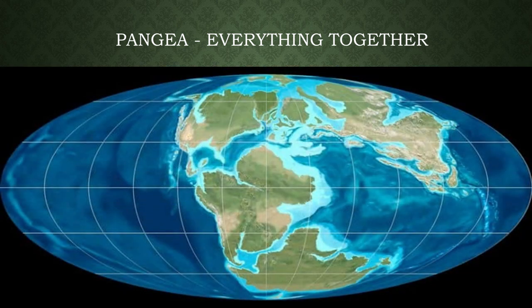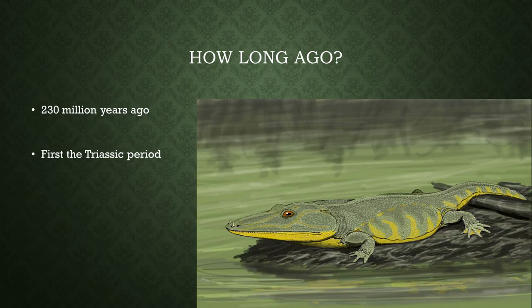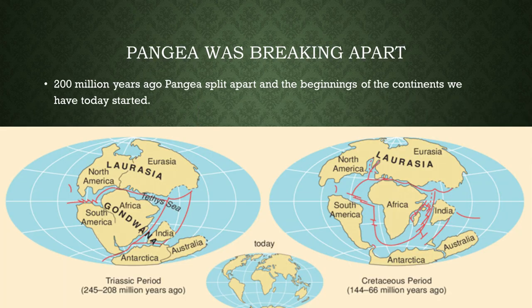But during this time, all the Earth's continents didn't look like they do today. Instead, we had Pangea, which is basically all the continents joined together. 230 million years ago we have the Triassic period — we can now see animals like the alligator and crocodile. 200 million years ago, Pangea split apart and the beginning of the continents as we know them today started.